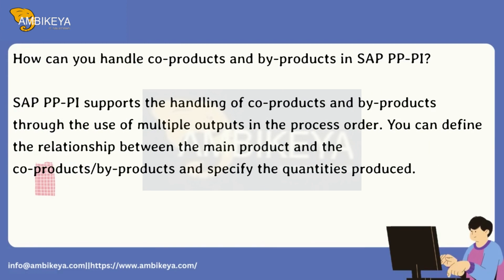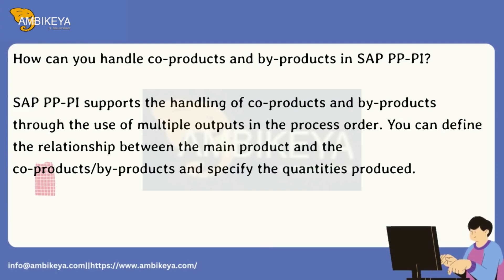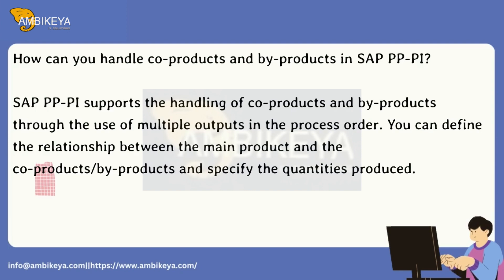How can you handle co-products and by-products in SAP PP-PI? SAP PP-PI supports the handling of co-products and by-products through the use of multiple outputs in the process order. You can define the relationship between the main product and the co-products or by-products and specify the quantities produced.